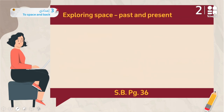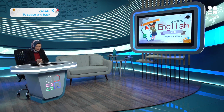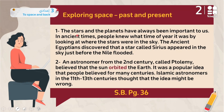Now we move to a reading passage in the student's book, page 36: 'Exploring Space: Past and Present.' 'The stars and the planets have always been important to us.' In ancient times — old past times — people knew what time of year it was by looking at where the stars were in the sky. People could tell the season just by observing the stars.